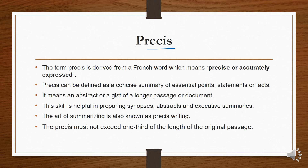The term précis is derived from a French word. It's a French language word 'précis,' which means precise and accurately expressed. Precise means that if something is very accurate, it doesn't have any difference in inches, no mistake — it's precise. It's completely correct and accurate.